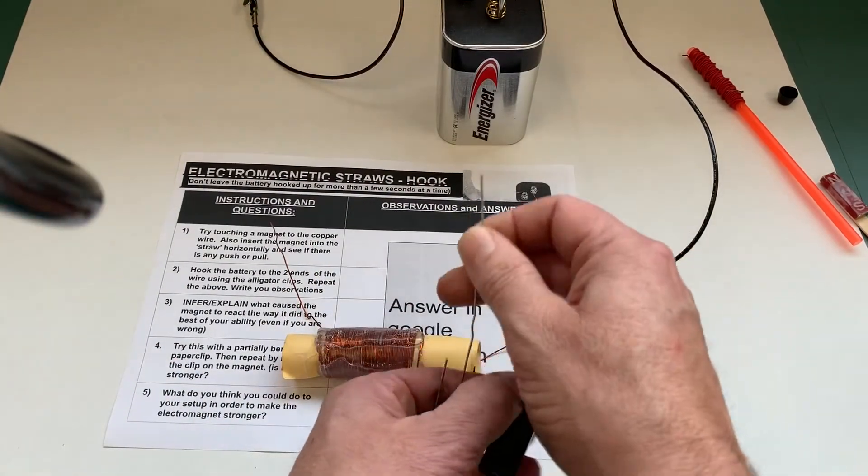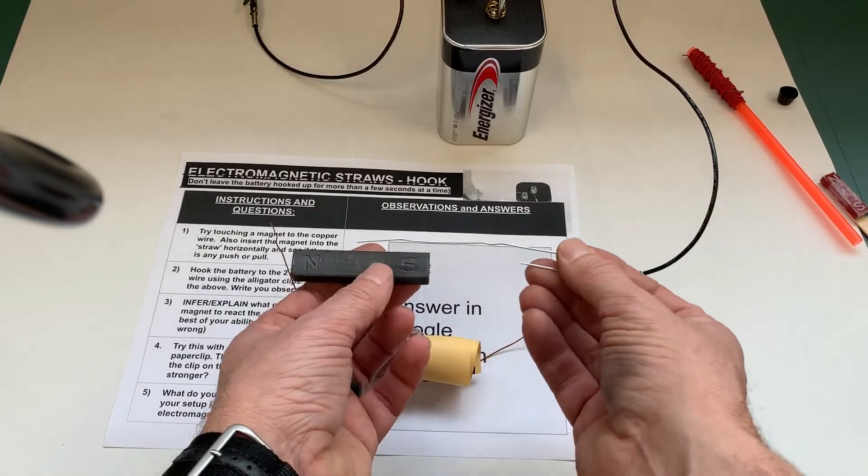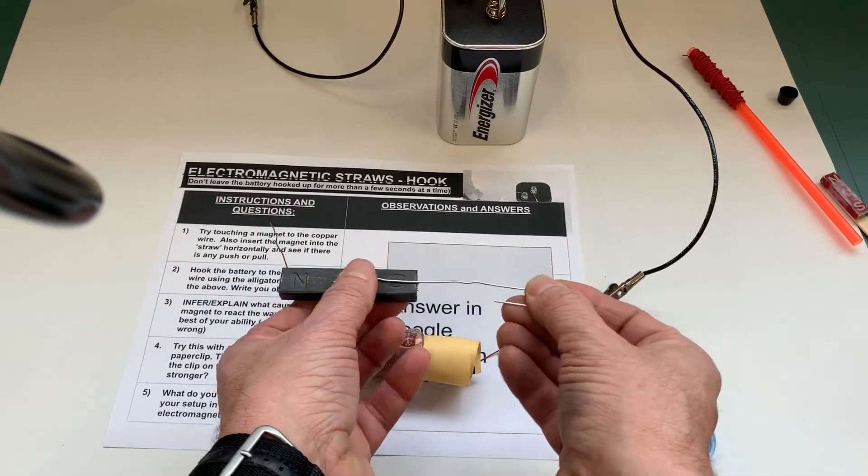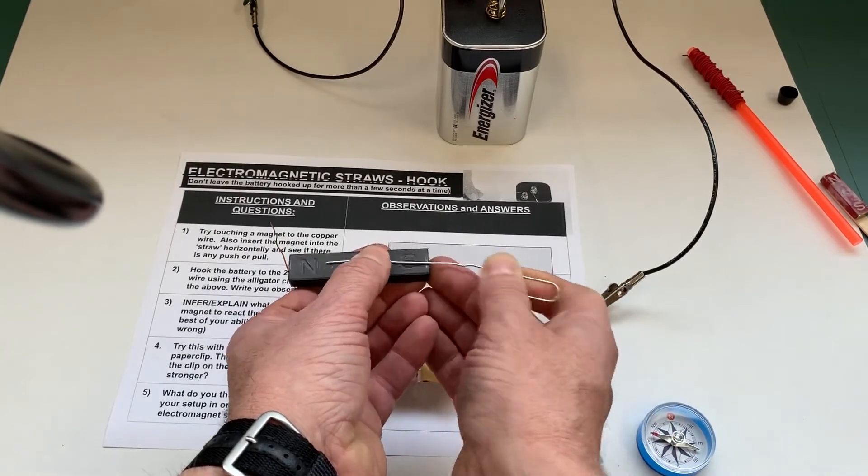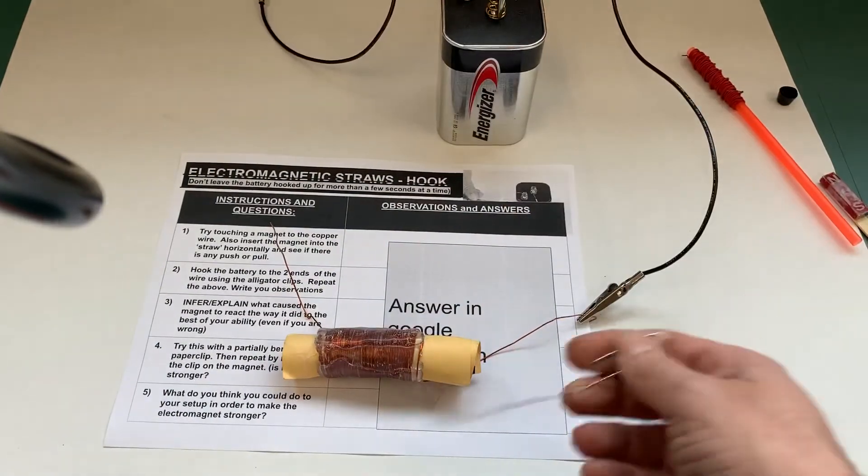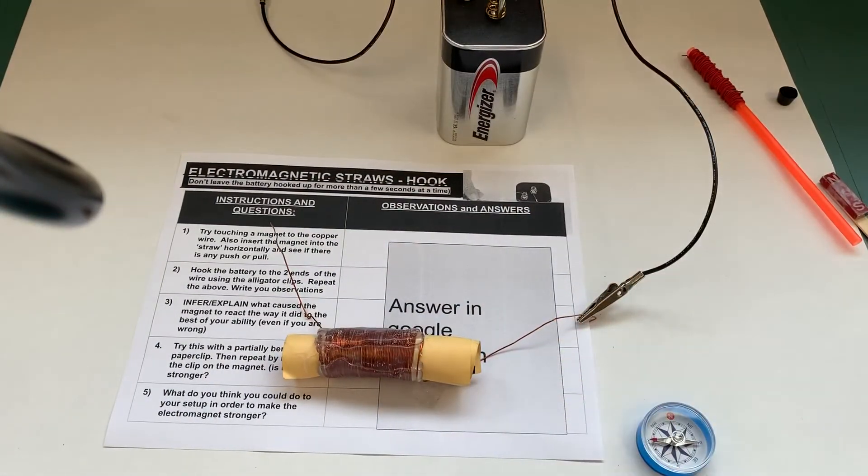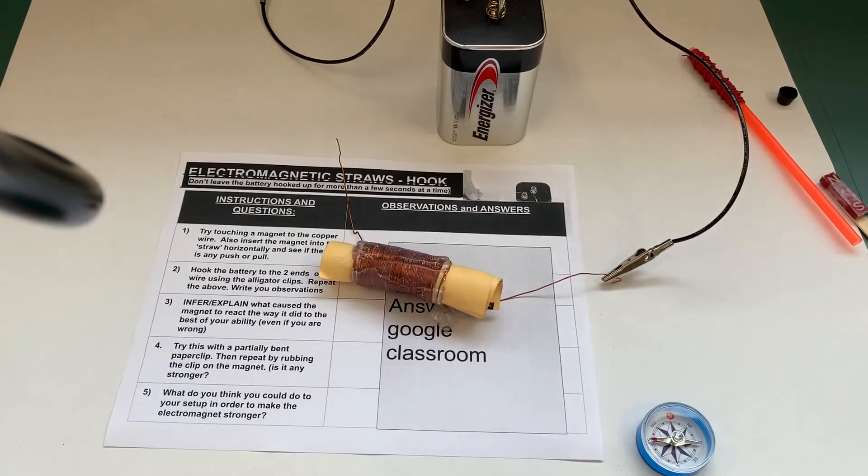And then see if it's any stronger or weaker if you take your paper clip, touch it to a magnet, and kind of rub the paper clip along the magnet for 15 or 20 seconds. Then hook this back up and see if it's any stronger or weaker than the previous effect. And then there's an additional follow-up question.